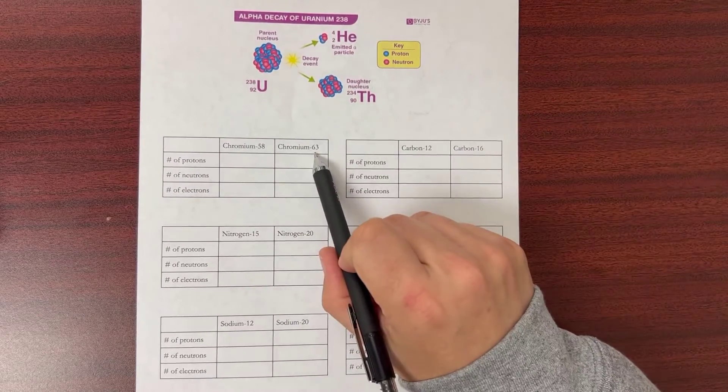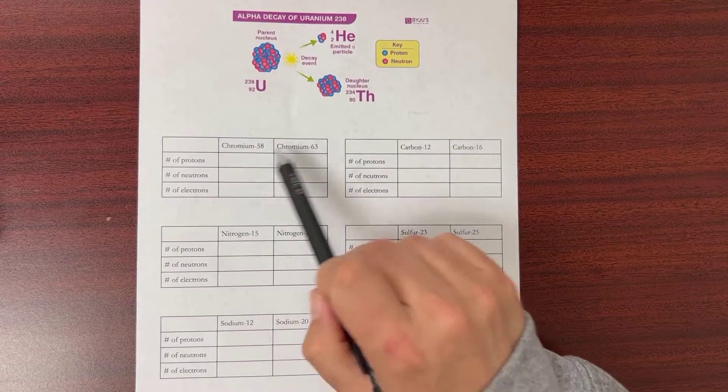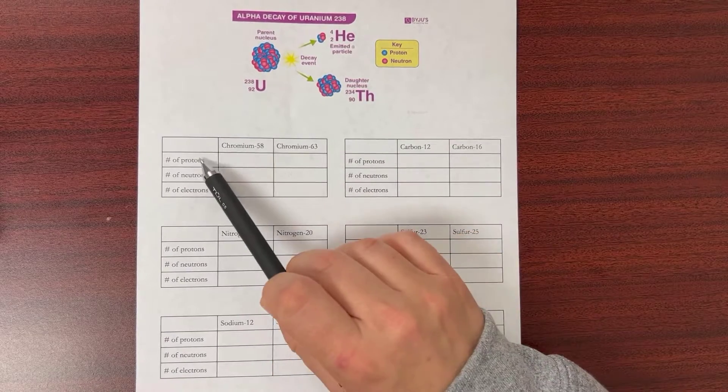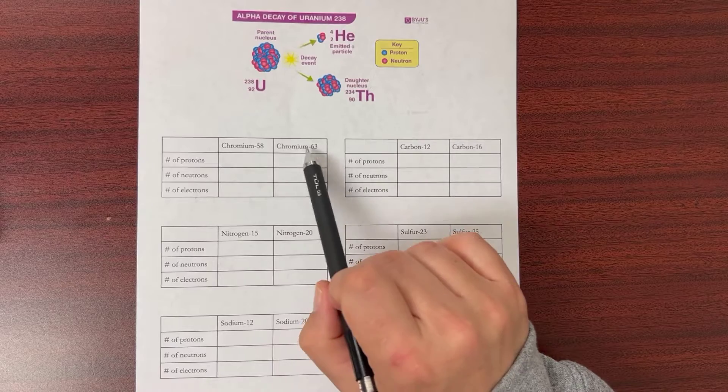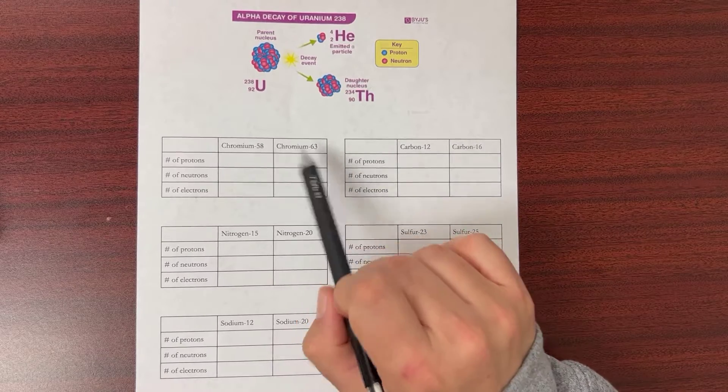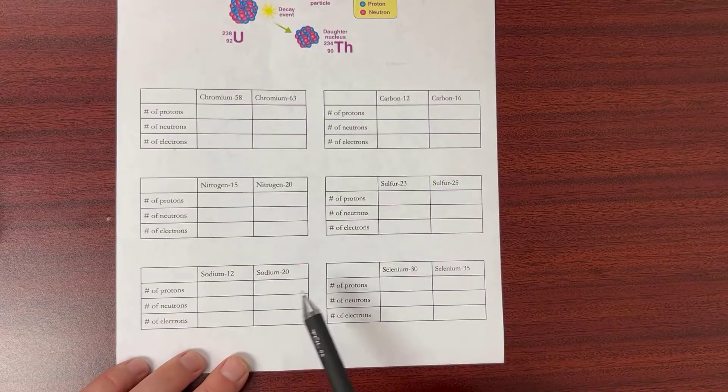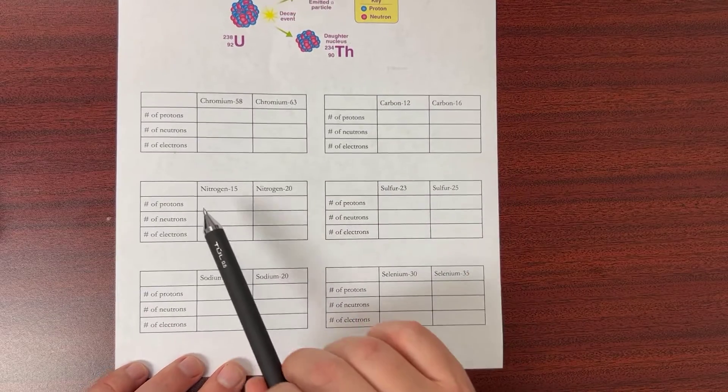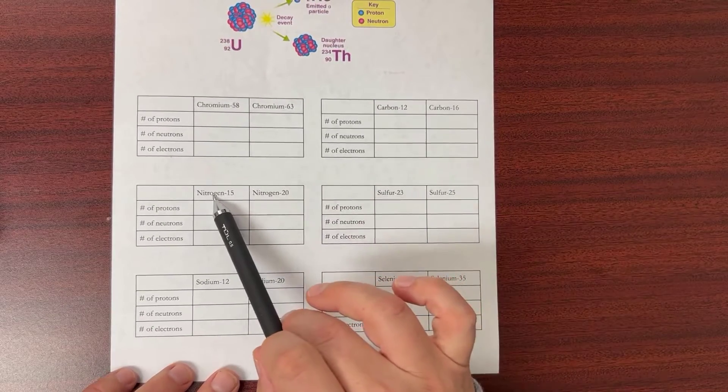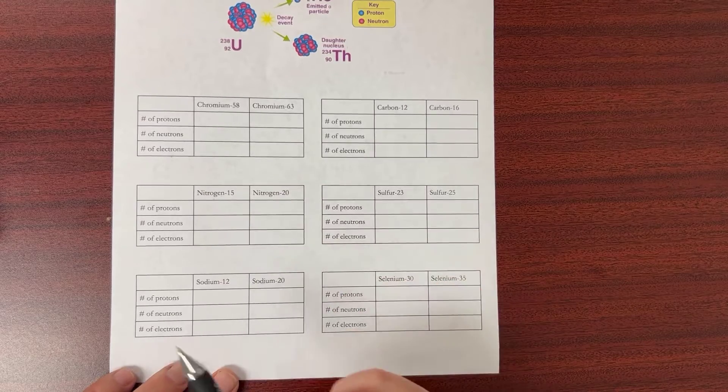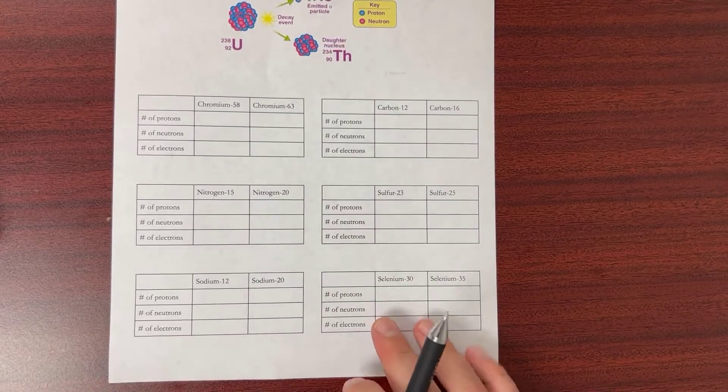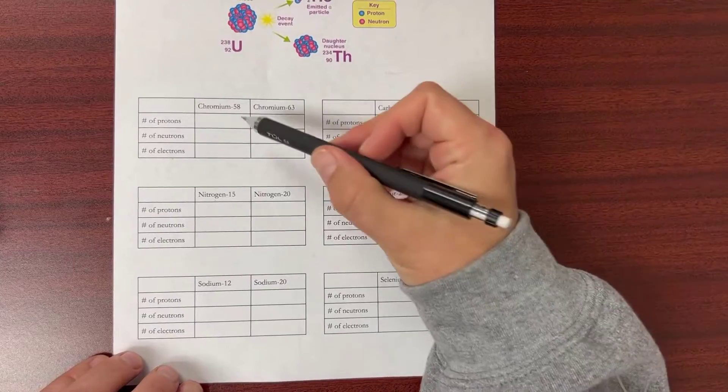We're just going to count up numbers here and get used to how many protons, neutrons, and electrons there are based on this number. You'll see that's what these charts are—just comparing isotopes of one element. Let's start off with chromium.